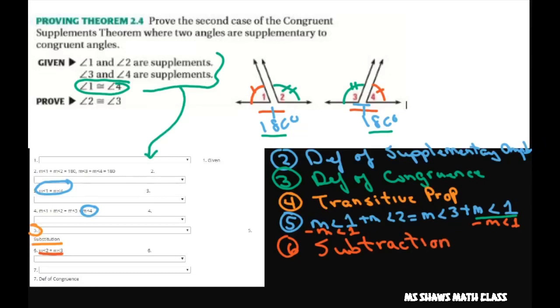And then for number seven, we have the definition of congruence. So instead of writing it this way, you're going to just write for number seven, angle 2 is congruent to angle 3. And that's what we were supposed to prove. And that's it.